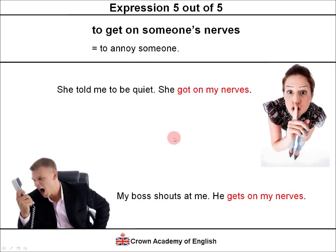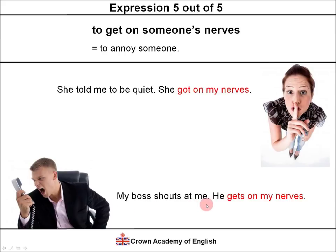Example two: my boss shouts at me. He gets on my nerves. This time we are using the present simple to describe a regular action or a habit. My boss shouts at me — he gets on my nerves — he annoys me because he shouts at me. This is a very, very good expression. You will hear this all the time in England, America, or anywhere where they speak English. It's probably the most common way to say 'to annoy someone.'